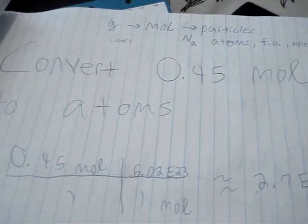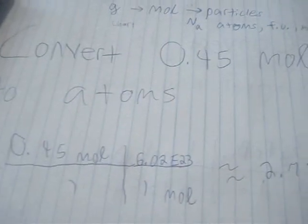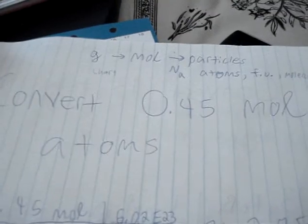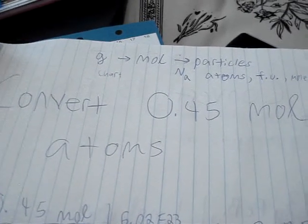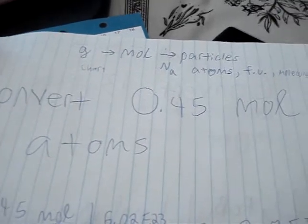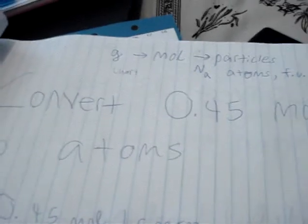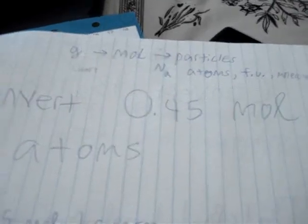In our first problem, we have convert 0.45 moles into atoms. Now, if we look up top here, a simple road map to follow is that you go from grams to moles to particles. And when you go from grams to moles, you get your masses off the periodic table chart. And when you go from mole to particles, you use Avogadro's number.